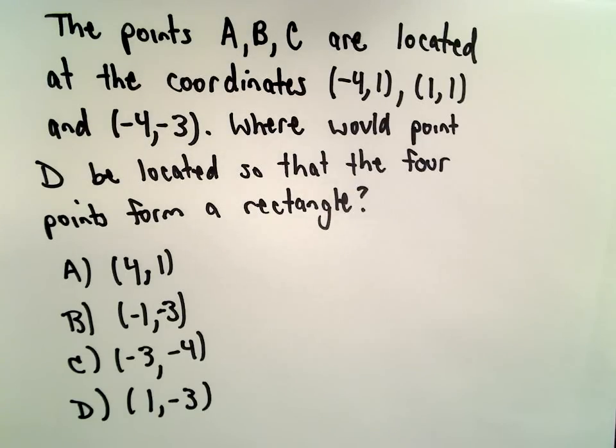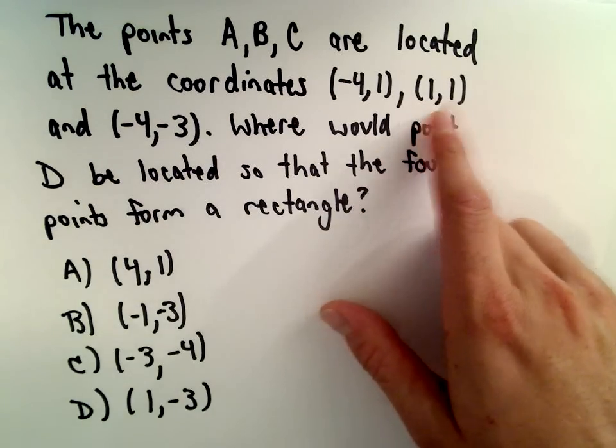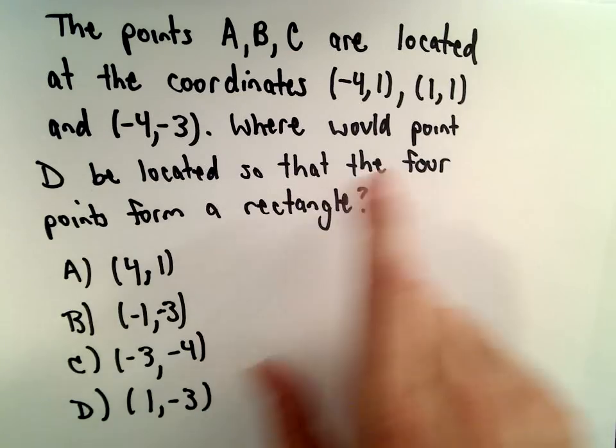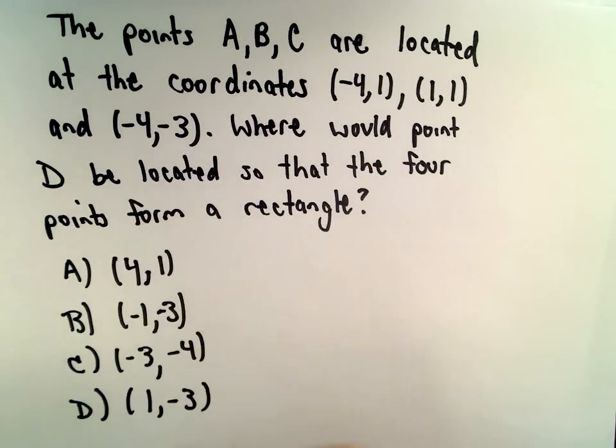Suppose we know that the points A, B, and C are located at the coordinates (-4, 1), (1, 1), and (-4, -3). We want to know where point D would have to be located so that the four points form a rectangle.